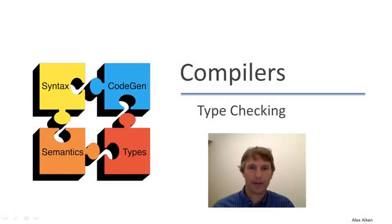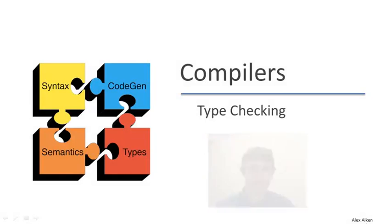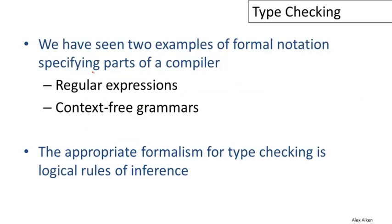In this video, we're going to talk about type checking in Cool. Thus far, we've seen two examples of formal notation used to specify parts of a compiler: regular expressions for lexical analysis and context-free grammars for parsing. It turns out there's another formalism which has gained widespread acceptance in type checking, and that's logical rules of inference.